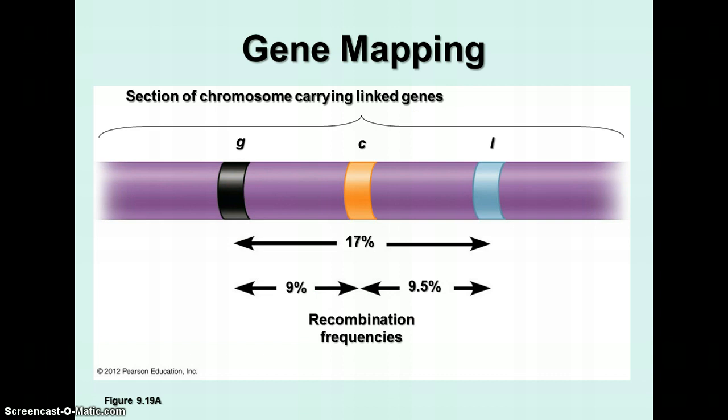Here's a section of chromosome with linked genes. We have three different genes: G, C, and L. From G to C, you only see those recombined about 9% of the time, and from C to L, you see those recombined about 9.5% of the time. But G and L are recombined about 17% of the time, so you can figure out that they are farther apart because you see them separated more frequently than the other two pairs, which are closer together.